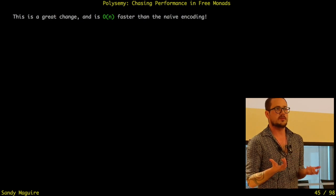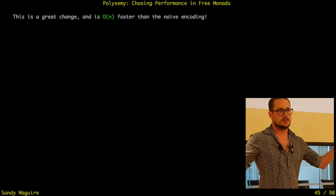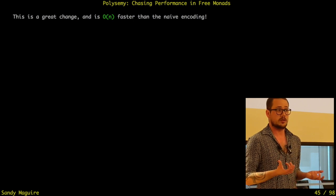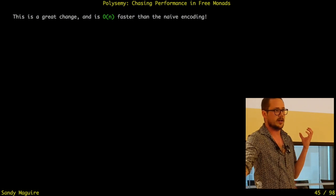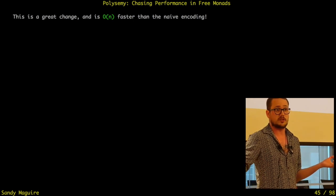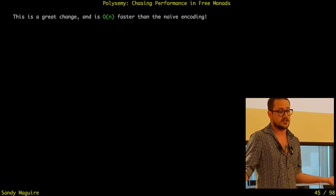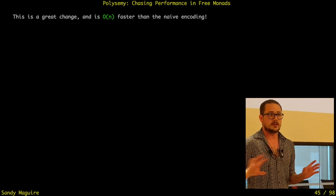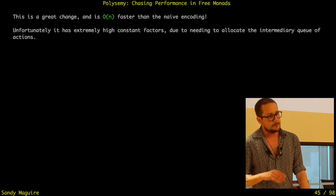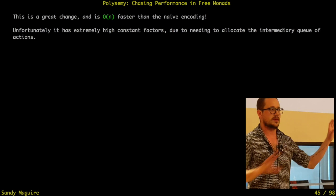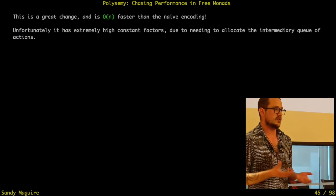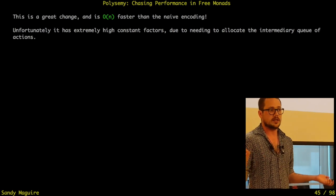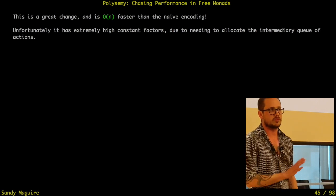The original naive approach to the free monad with the deep continuation is asymptotically terrible. Every time you bind, you need to go all the way through to the very end — that's O(n) — and then put something, so to construct something of size n, that's O(n²). If you use a list instead, that's just O(n) — you just need to append. But it's got really high constant factors because we have this big list of effects we're running, needing to allocate for it and clean up later. Even though it's O(n), it's about 35 times slower than just running IO.